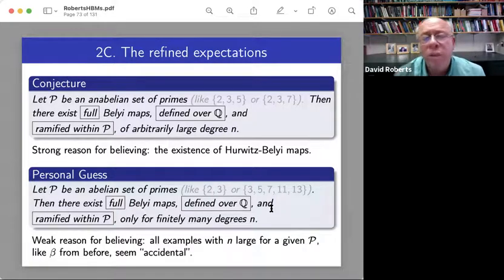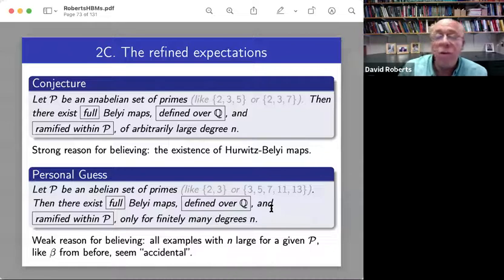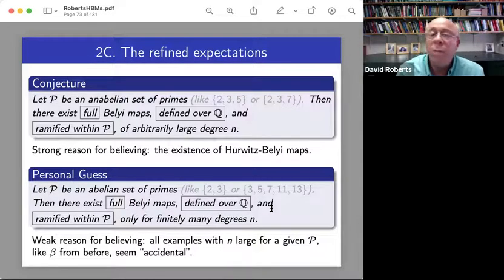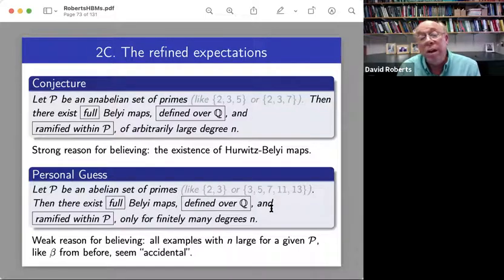All right, I want to complement this with a stubborn personal guess. So let P be an abelian set of primes. Then there exists full Belyi maps defined over Q and ramified within P, the big three again, only for finitely many degrees n.